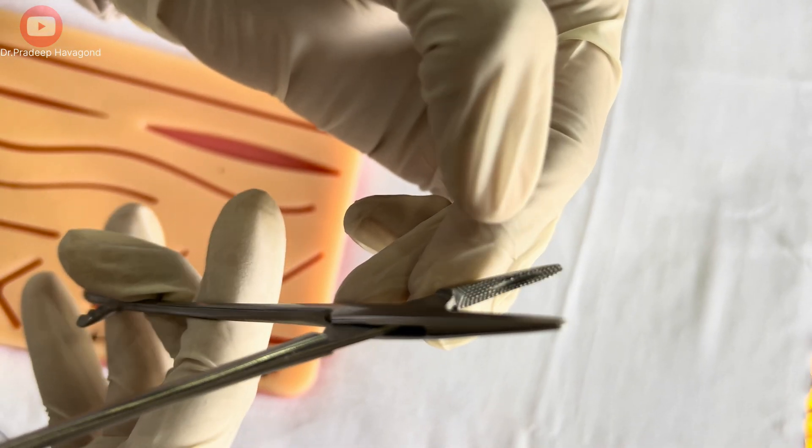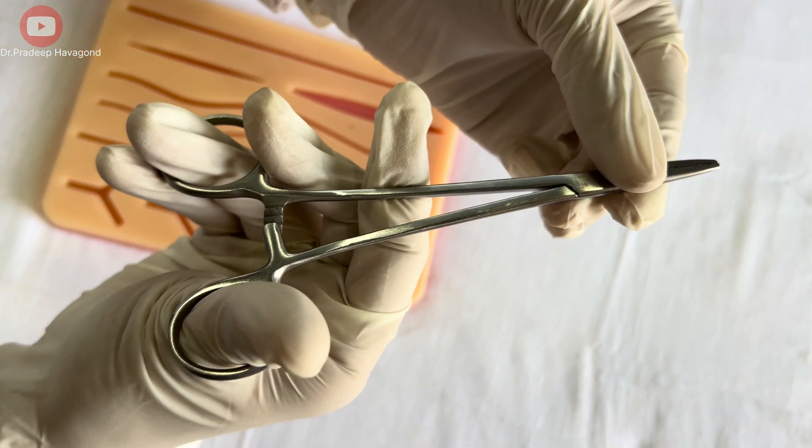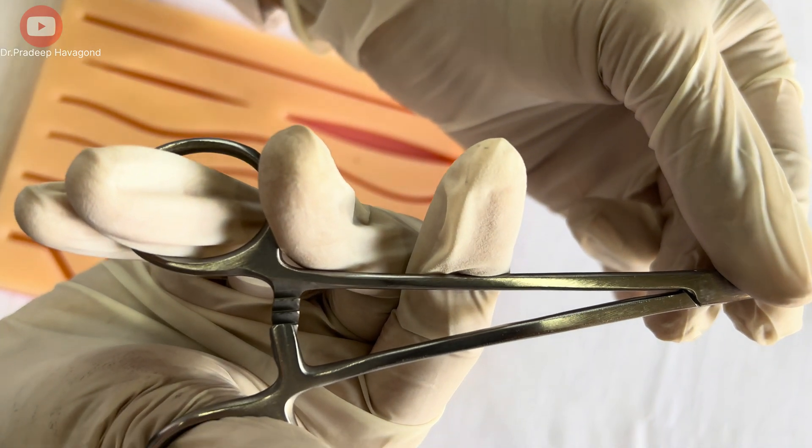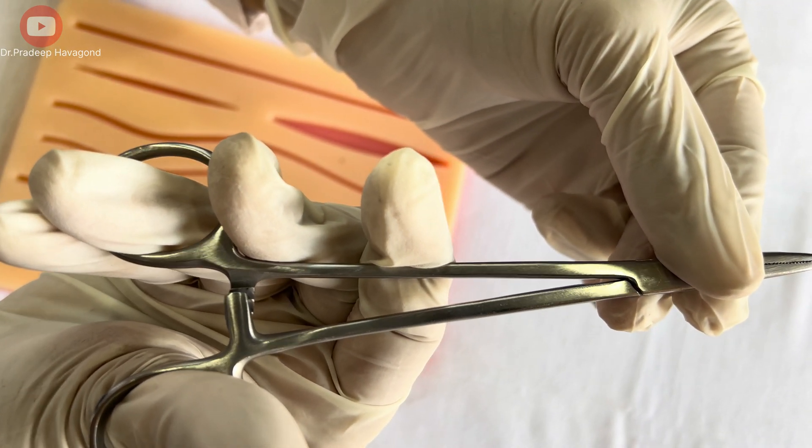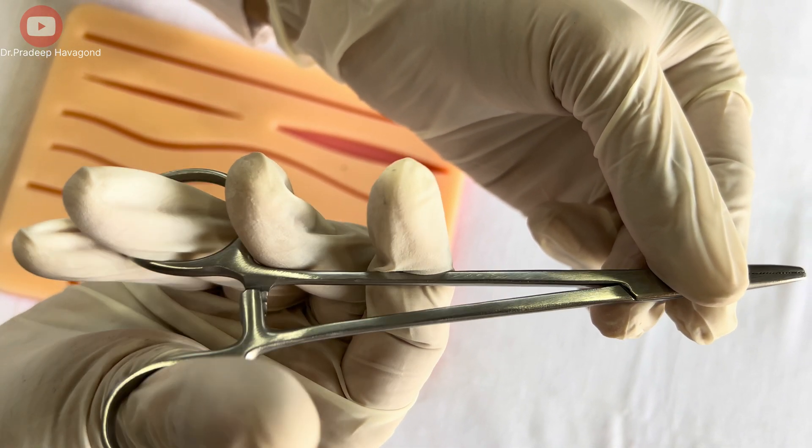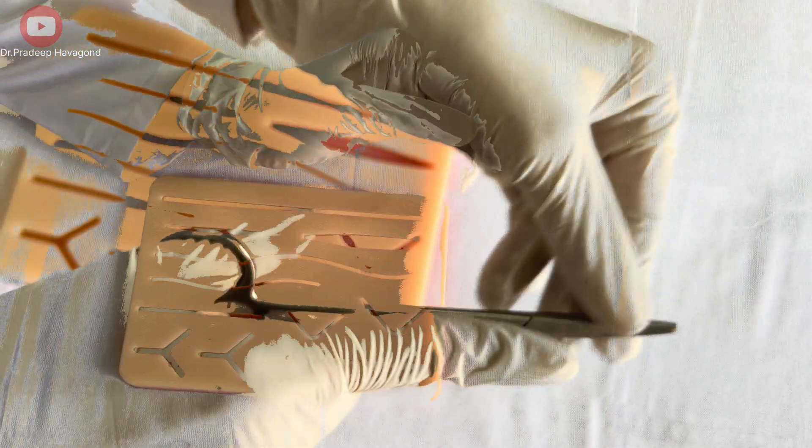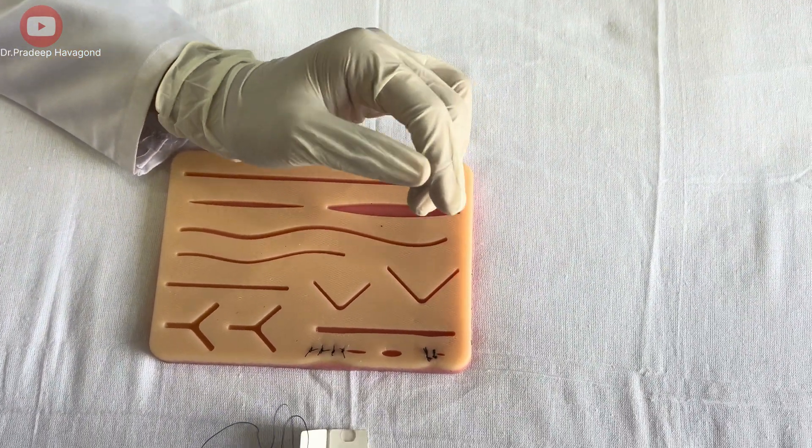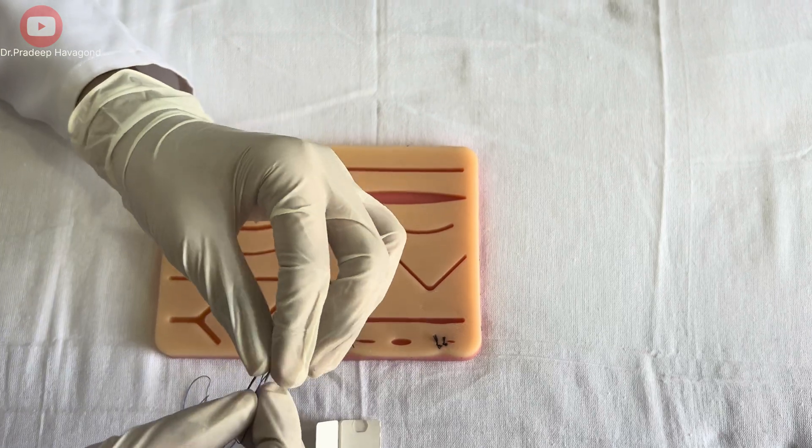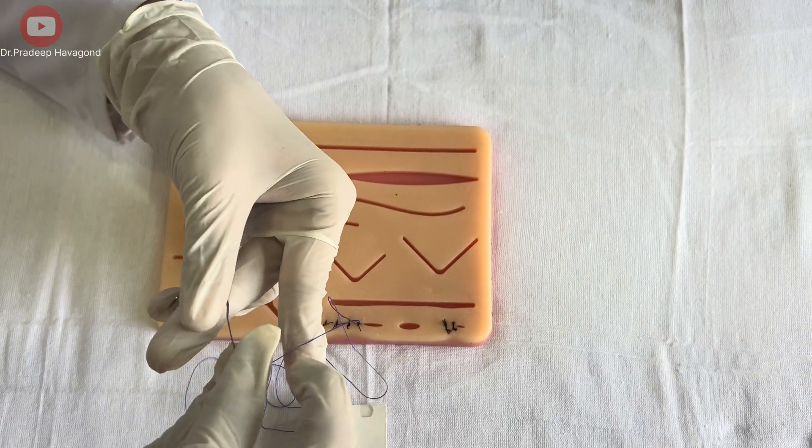After holding, you have to put this lock. So this is the ratchet. There are three locks here. The more you apply the lock, the tighter this jaw will hold the needle. Normally, two locks are sufficient to hold the needle tightly. This is the tip of the needle, and this is the swagged end.